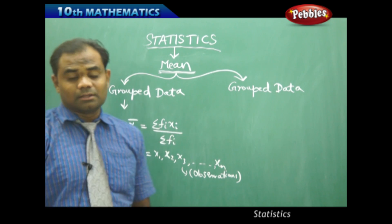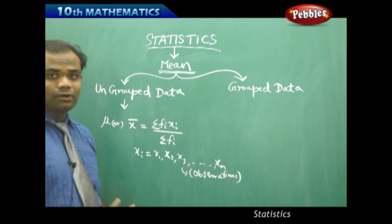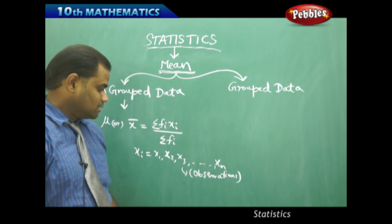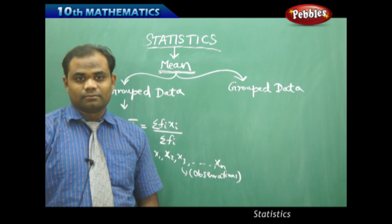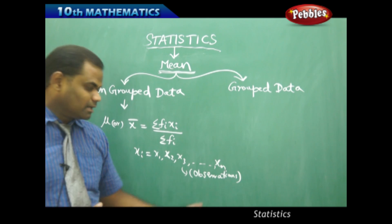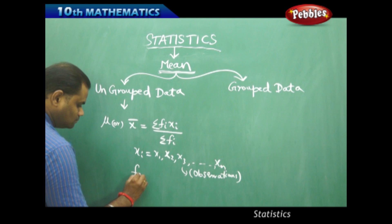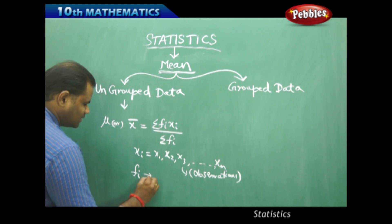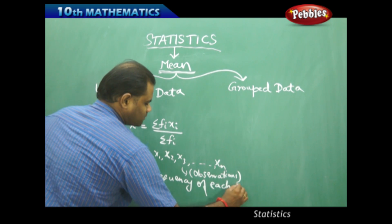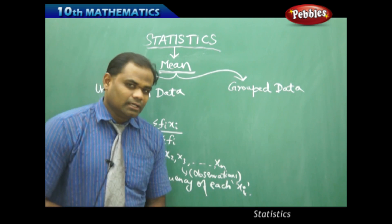Observations are values like the marks obtained in mathematics. Each of the marks obtained by every individual student in mathematics out of 100 marks is an observation. The marks of each student are identified as observations — in mathematical or statistical language, we call them observations.